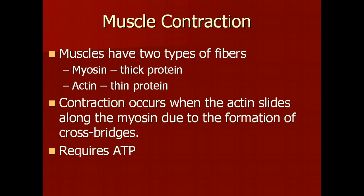All muscle contractions happen in a similar fashion. Muscles have two types of fibers: myosin, which is a thick protein, and actin, which is a thin protein. Contraction occurs when the actin, the thin protein, slides along the myosin due to the formation of cross bridges.